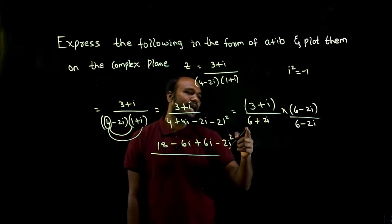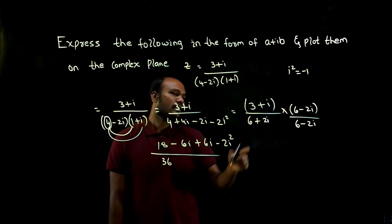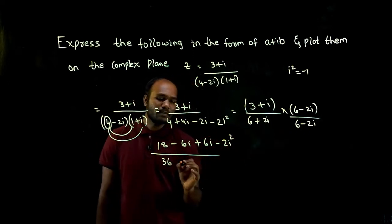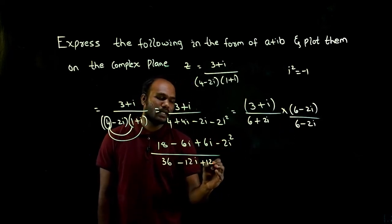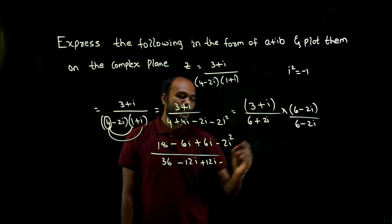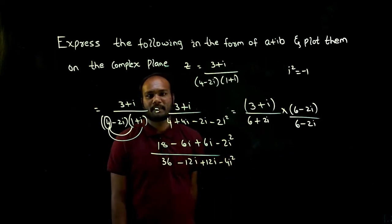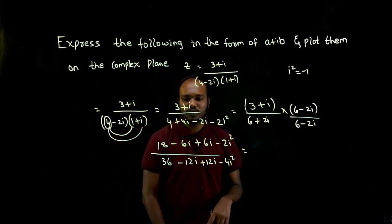In the denominator, 6 into 6 is 36, 6 into minus 2i is minus 12i, 2i into 6 is plus 12i. Again, plus into minus is minus, 2 into 2 is 4i squared. Is that correct?